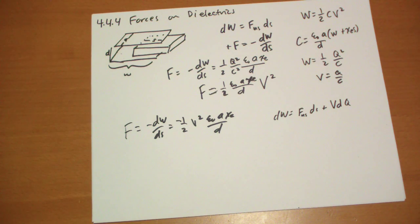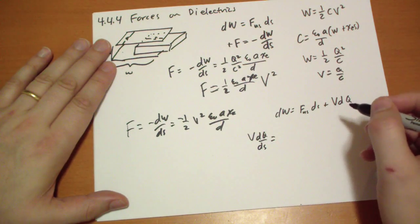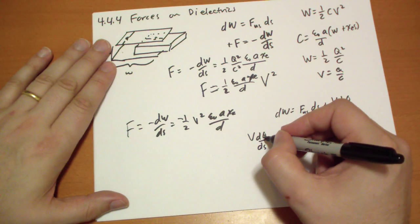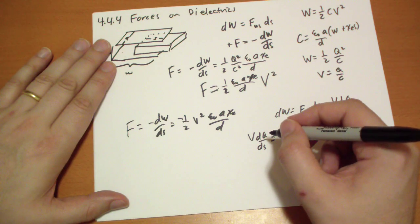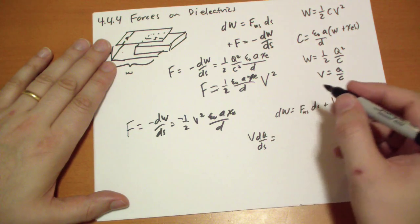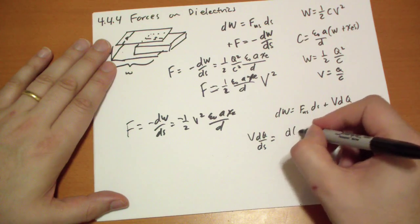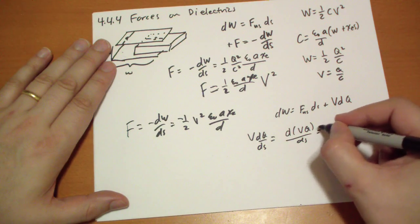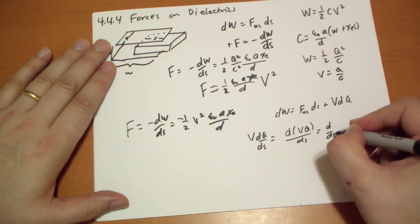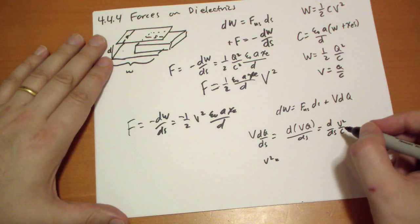And so we can calculate VdQ. VdQ by dS. So VdQ by dS is equal to, well, Q varies. How does Q vary? Where's Q? Q is, wait, hold on a second here. Q is V over C. That's right. So let's change this equal to, Q is VC. That's V squared over C. So it's d by dS of V squared over C. So we take the V squared out because that's held constant. Then one over C. No, dC by dS. V squared C.